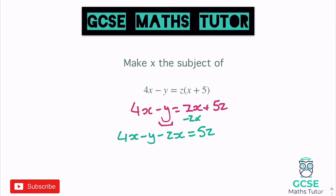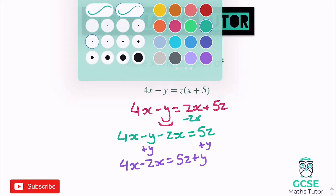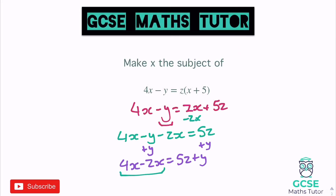Now add that y over, and that will just leave the x's on their own on the left-hand side. So add y to both sides, and we get 4x minus zx equals 5z plus y. Now we can do the same thing again — we can factorise this left-hand side. Factorising by x gives us x brackets 4 minus z.